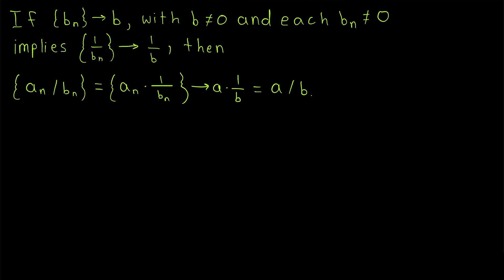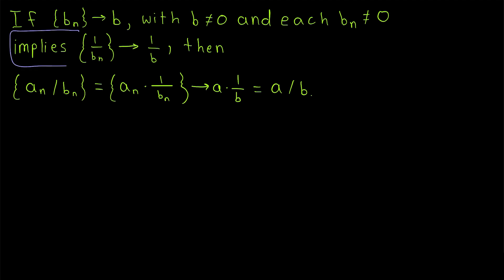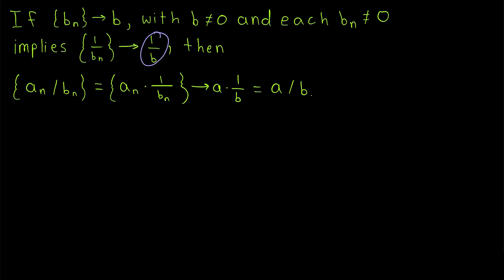Here's the logic one more time. We're saying that if the sequence bn converging to b, with b not equal to 0 and each bn not equal to 0, implies that the sequence 1 over bn converges to 1 over b, then we'll have our proof done for the quotient of sequences. Because the sequence an over bn equals the sequence an times 1 over bn, and by the limit law for the product of sequences, this would converge to a times 1 over b, which is a over b. So all we have to do is prove this implication.